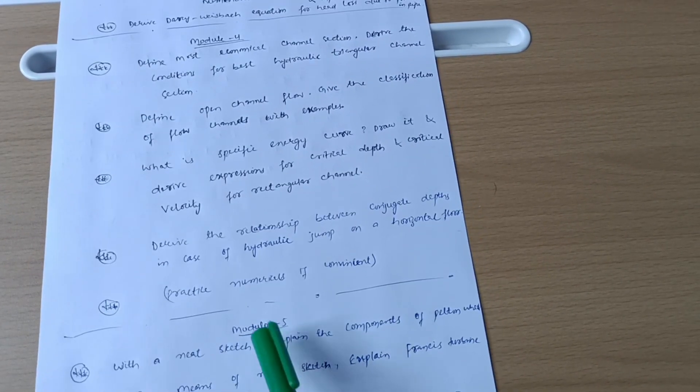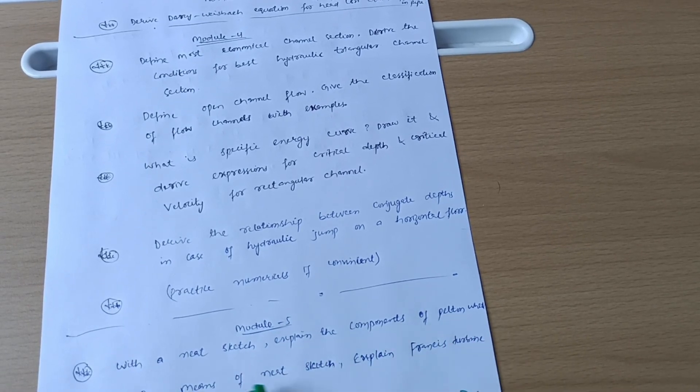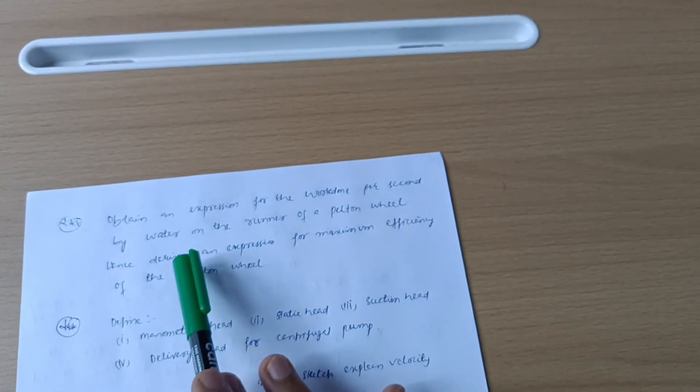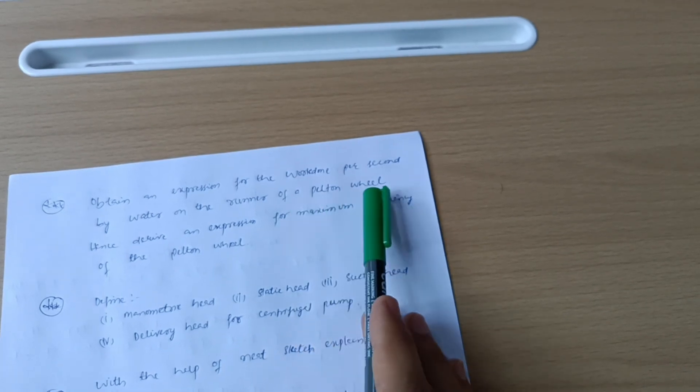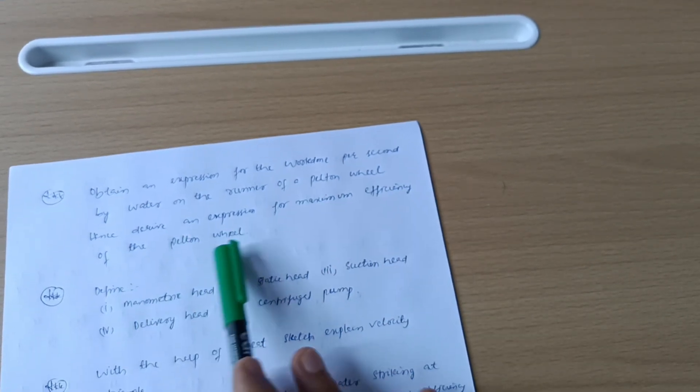Next is Model 5. With a neat sketch explain the components of Pelton wheel, and by means of neat sketch explain Francis turbine. Next we have derive an expression for the work done per second by water on the runner of the Pelton wheel. Hence derive an expression for maximum efficiency of the Pelton wheel.